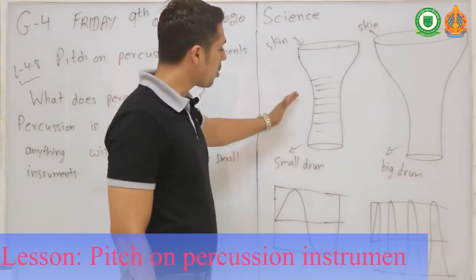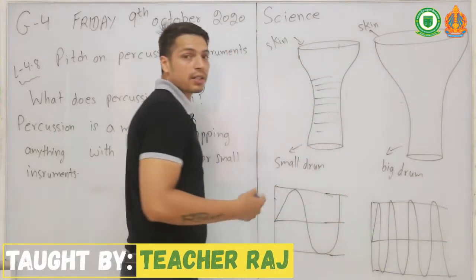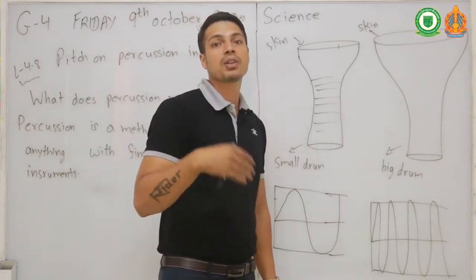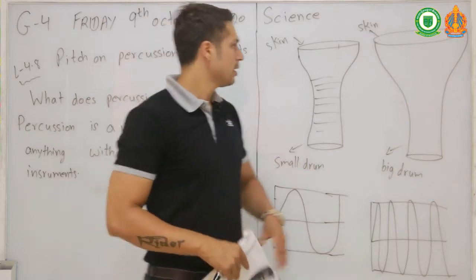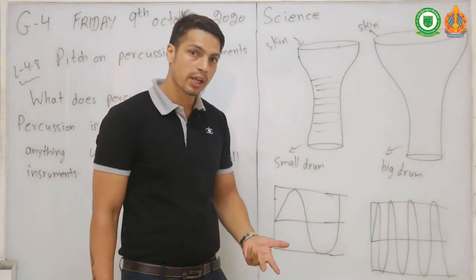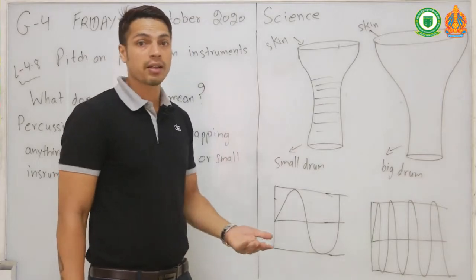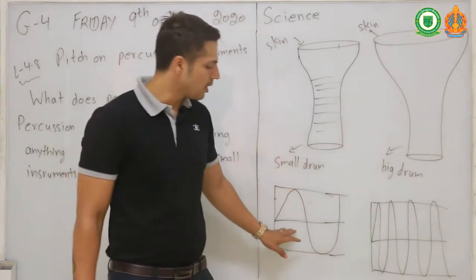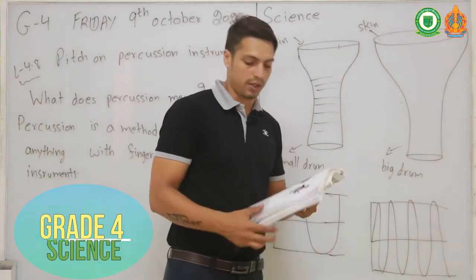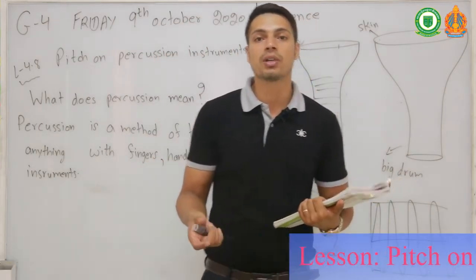A small drum makes a high-pitched sound because it vibrates quickly — when you tap it, it does not take long to wobble back and forth. A bigger drum, on the other hand, takes more time to wobble back and forth, so it doesn't bounce back quickly. It takes more time to make vibrations, which is why a big drum has a lower pitch and a small drum has a higher pitch.